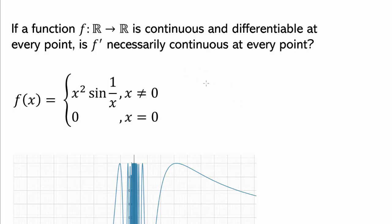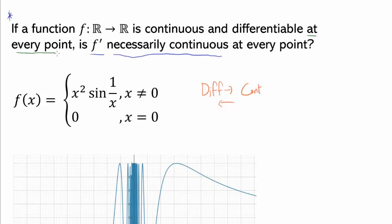We all know from Calculus 1 that differentiability implies continuity, but the converse is not necessarily true — continuity does not necessarily imply differentiability. But one question we rarely ask in introductory calculus is whether f' is necessarily continuous. Specifically: if a function f mapping from the real numbers to the real numbers is continuous and differentiable at every single point, do those derivatives have to be continuous at every point? Pause and think about this for a moment.